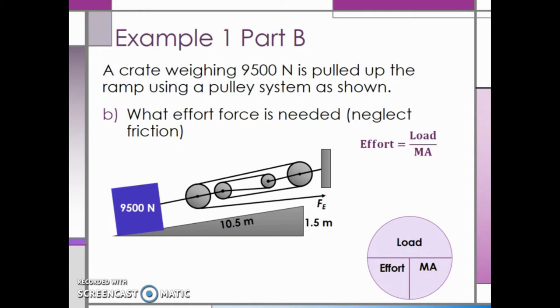Substituting in 9,500 newtons for the load force and 35 for the mechanical advantage, which is what we found in the previous part, we see that the effort force required should be 271 newtons. This concludes our discussion of compound machines and unit 5.